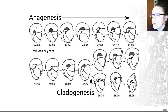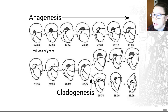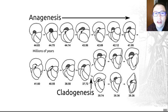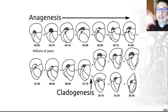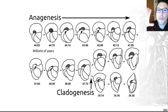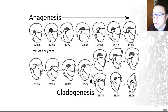This is speciation happening in action — an objective, quantitative way of identifying it. We have a long period where time passes and the morphology of organisms changes along the lineage; this is anagenesis — a lineage changing through time but not splitting. But then at 37 million years, based on objective criteria, we can see a split into two different species. That's a cladogenetic event, and that is speciation happening in the fossil record. It's a really lovely example.